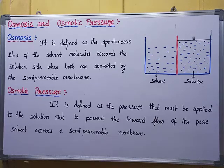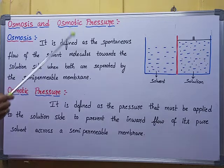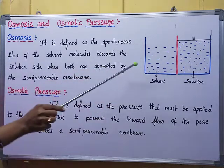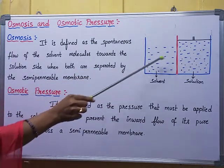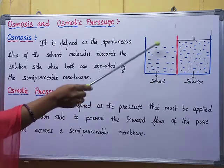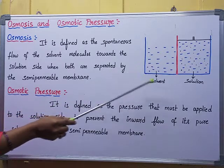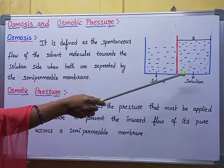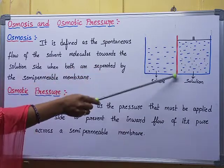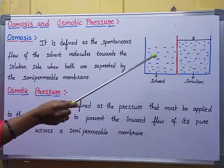Hello students. In today's video I'll explain about osmosis and osmotic pressure. In order to understand osmotic pressure, you must know the process of osmosis. Looking at this diagram, it consists of two compartments: one is solvent and another one is solution. Solvent means pure water, and solution means salt solution or sugar solution. Both are separated by the semipermeable membrane.